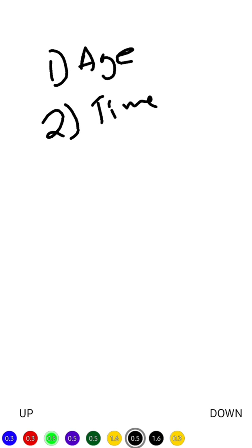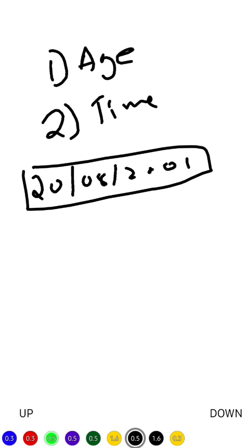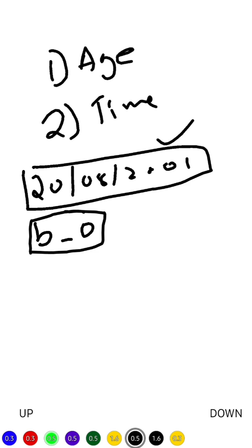Let's suppose you are born on 20 August 2001 — this is your birth date, and this will be saved in birthday_old, which we'll denote as 'bo'. The next thing to save is the current date.